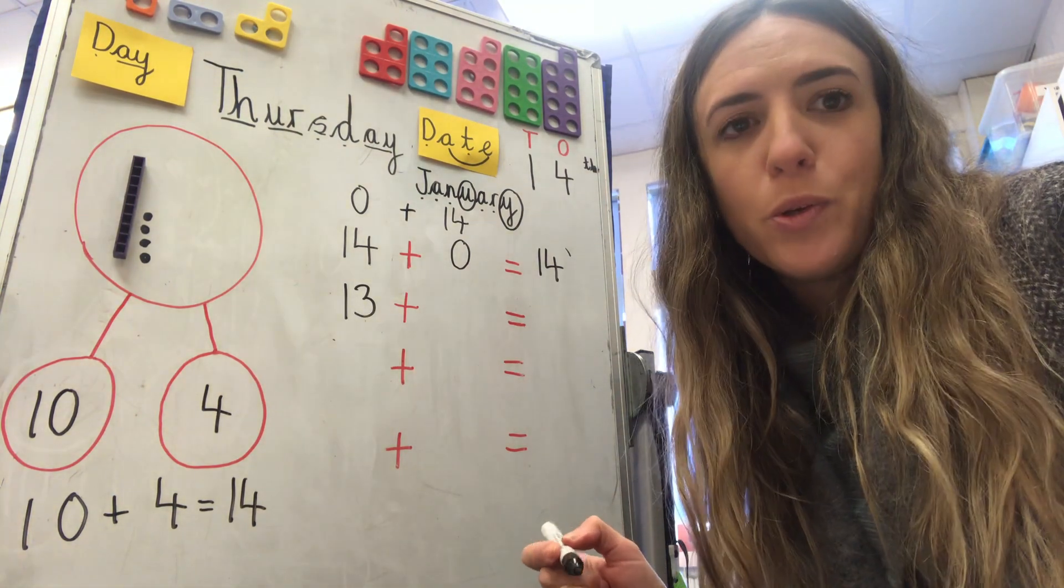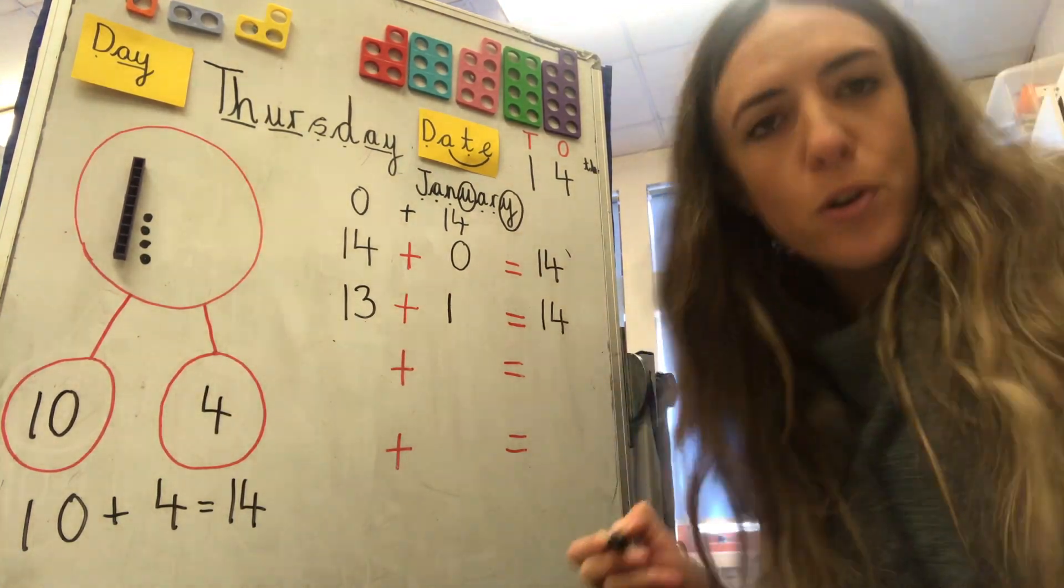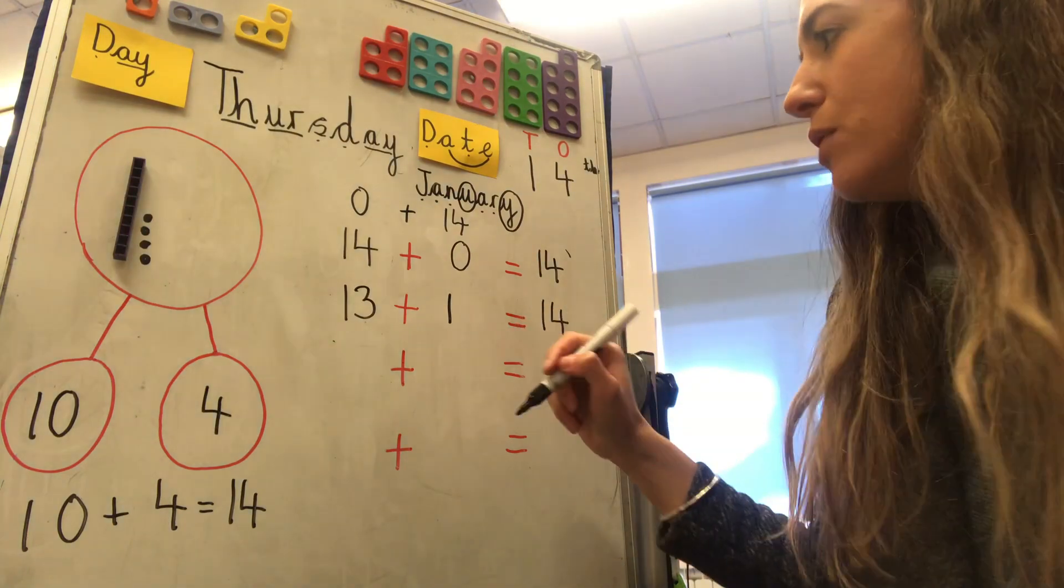Add how many more? One more. Equals fourteen. Super. Fourteen altogether.